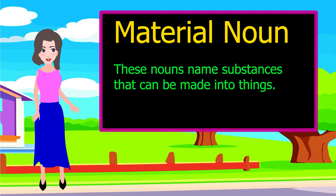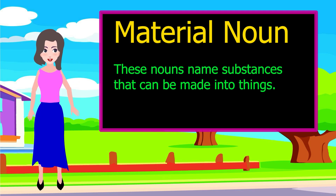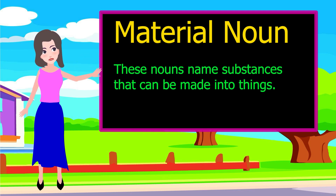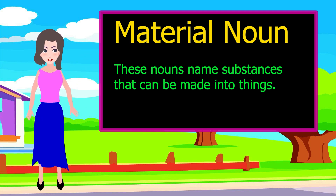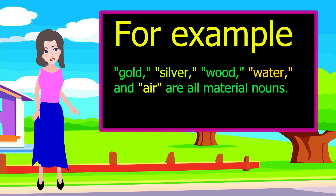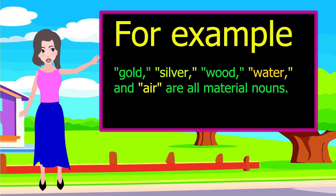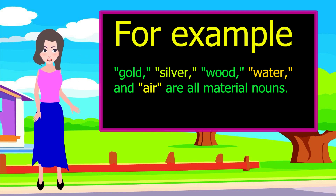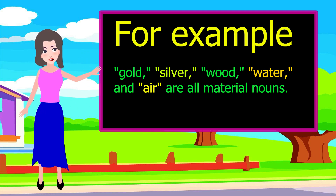Material nouns name substances that can be made into things. For example, gold, silver, wood, water, and air are all material nouns.